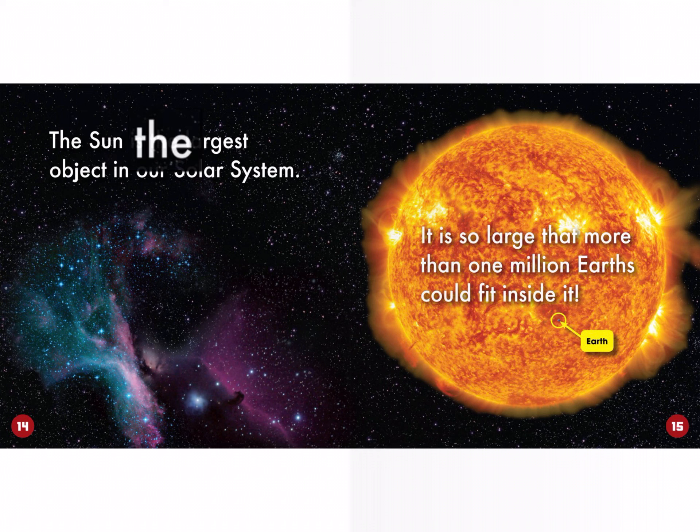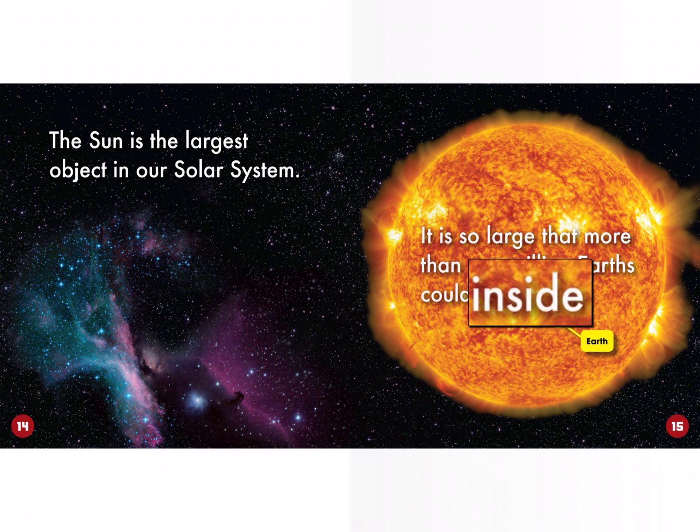The Sun is the largest object in our solar system. It is so large that more than one million Earths could fit inside it.